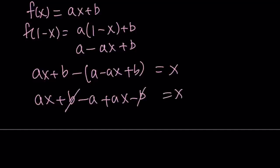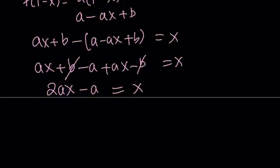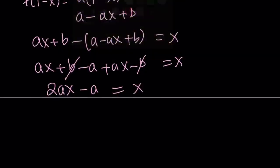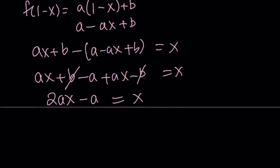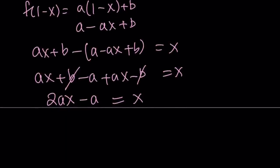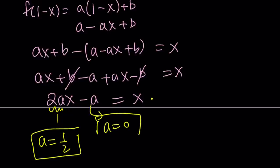We end up with 2ax minus a equals x. So we have two polynomials that are equal to each other for every value of x in the domain. The coefficient of x should be the same on both sides, so 2a equals 1, which means a equals 1 half. But on the other hand, we have a constant here but not here, so a should equal 0. These two can't happen at the same time. That is a contradiction. Therefore, f of x cannot be linear.